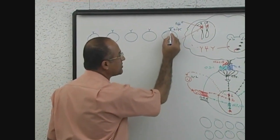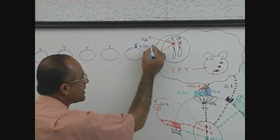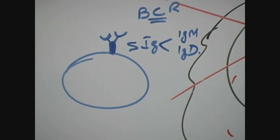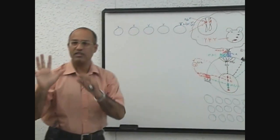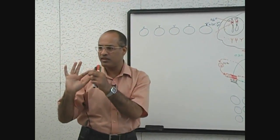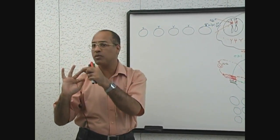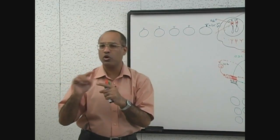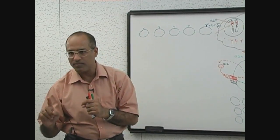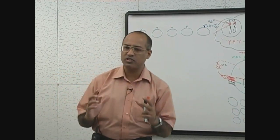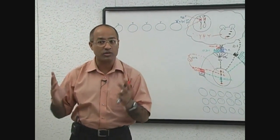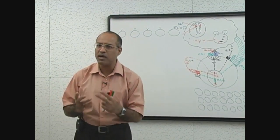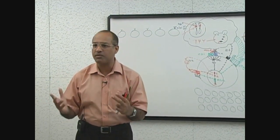These are surface immunoglobulins or surface antibodies. Classically they belong to IgM class or IgD class — I will explain this later in lectures. There are 5 main classes of antibodies: IgG, IgM, IgD, IgE, and IgA. On the surface of the B-cell, either there are immunoglobulin M or immunoglobulin D. So we can say that the surfaces of B-lymphocytes are decorated by surface immunoglobulins belonging to the class of IgM or IgD, and these molecules are acting as B-cell receptors for the antigen.